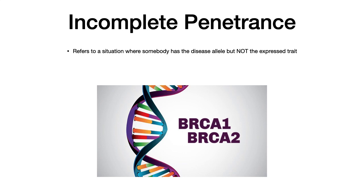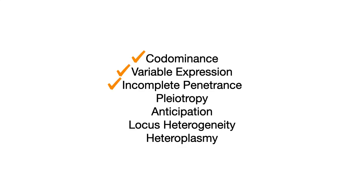Rarely, test writers will ask you to calculate penetrance. It's actually quite simple — penetrance is the number of people with symptoms divided by the number of people with the diseased genotype. For example, if one person had breast cancer but 10 people had BRCA1, the penetrance would be 1 over 10, or 0.1. It's somewhat intuitive once you think about it.